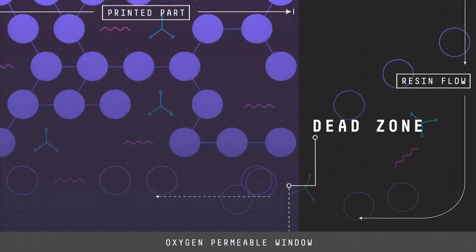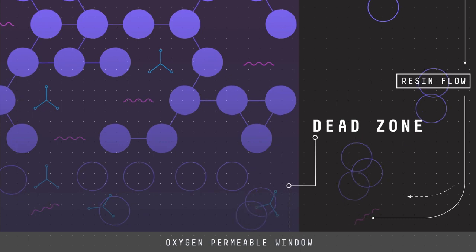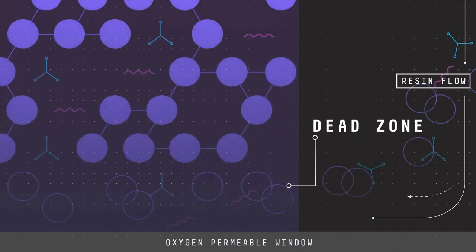Just above the dead zone, the UV light projected upwards causes a cascade-like partial curing of the part.